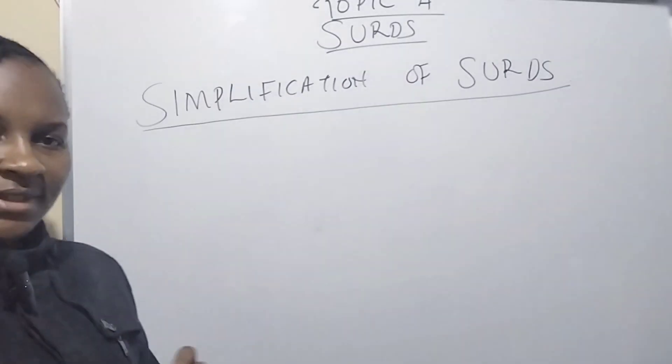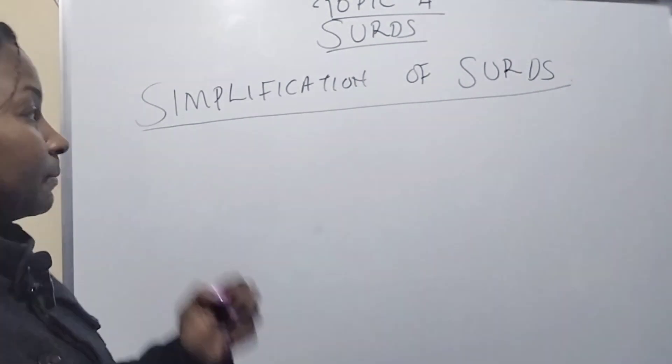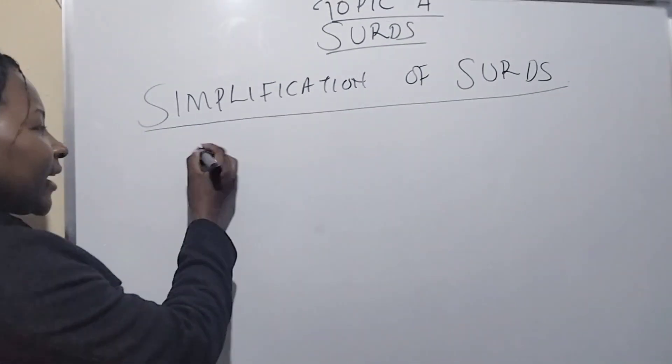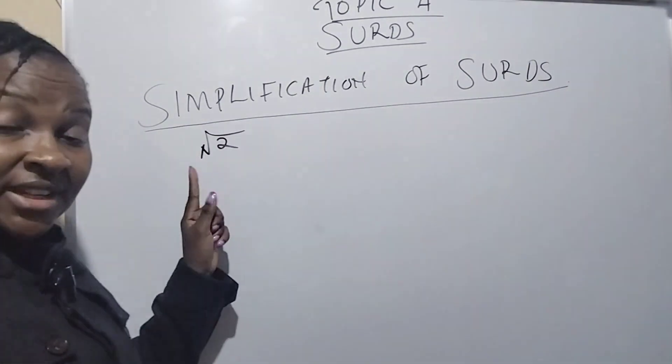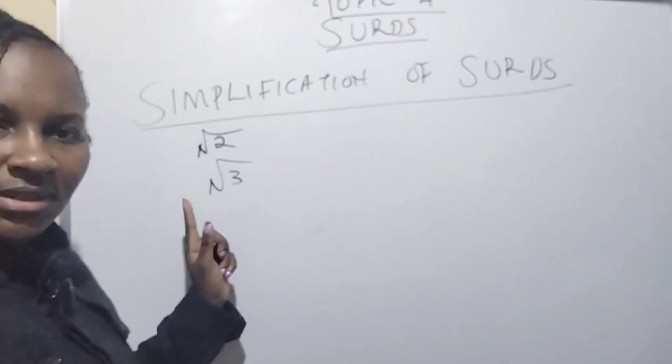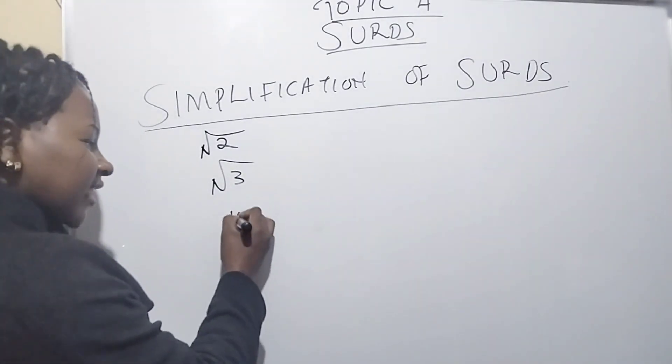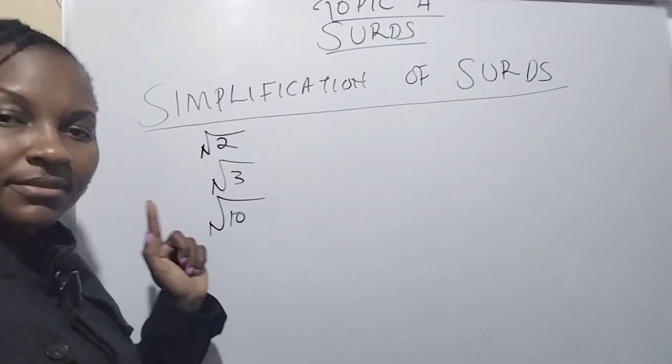Now in the simplification of surds. We have examples like square root of 2, square root of 3, and square root of 10. These are all examples of surds.